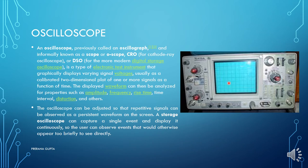The oscilloscope displays a two-dimensional plot of a signal and can measure amplitude, frequency, rise time, time interval, and distortion. It can be adjusted so that repetitive signals can be observed as a persistent waveform on the screen. A storage oscilloscope can capture a single event and display it continuously, allowing the user to observe events that would otherwise appear too briefly to see directly.